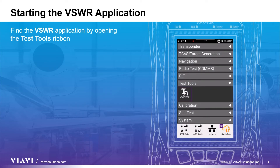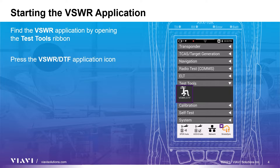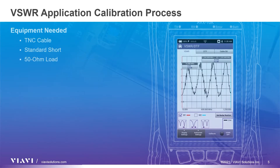After turning on your test set, open the test tools ribbon and select the VSWR DTF application. Before taking measurements, the calibration procedure needs to be performed. The tools needed include a cable, a standard short, and a 50 ohm load.